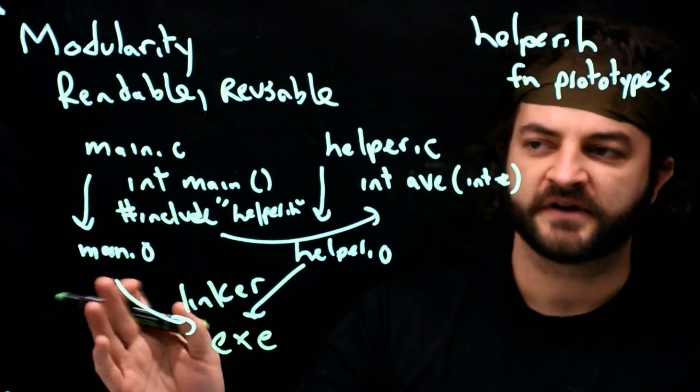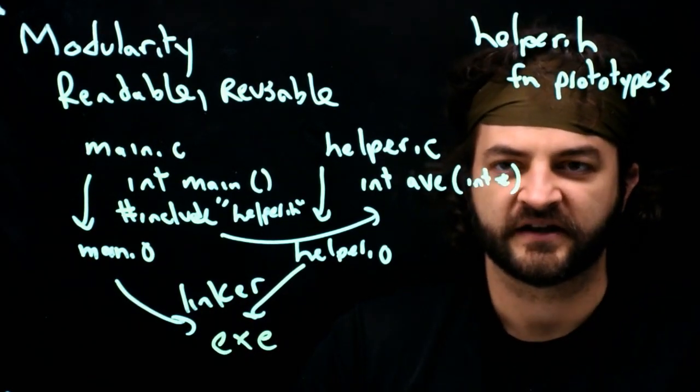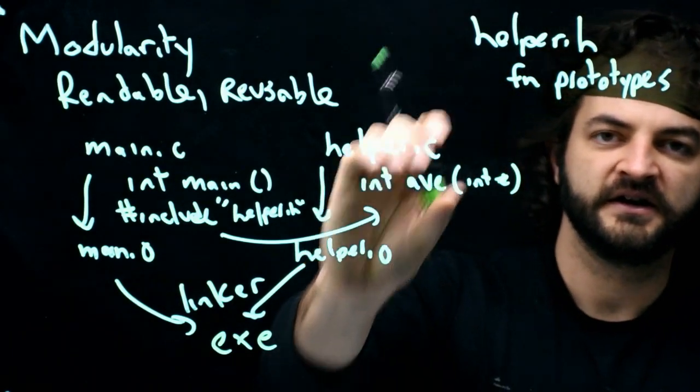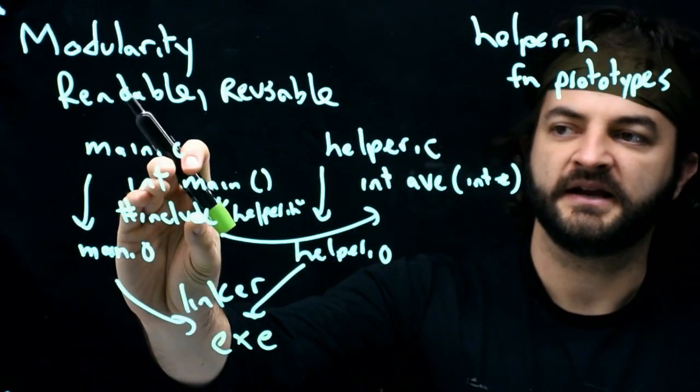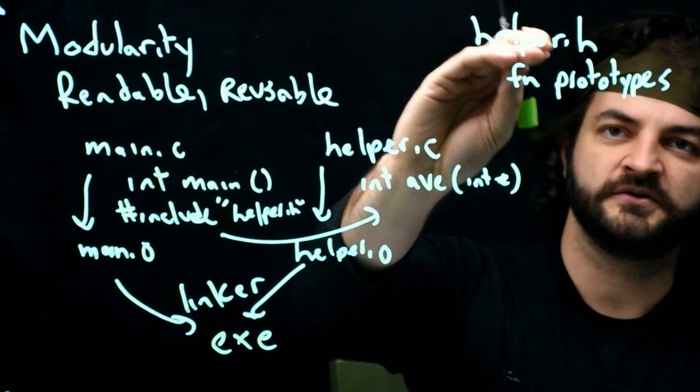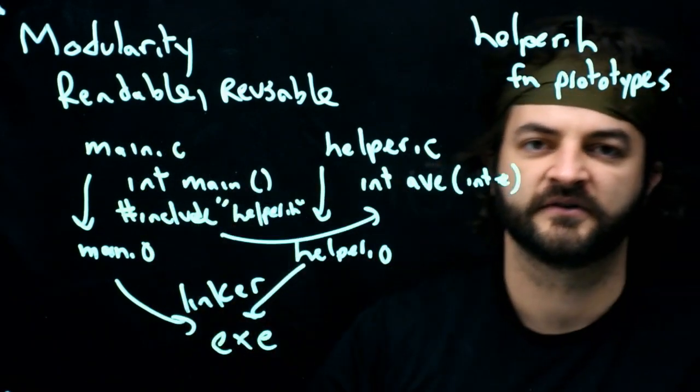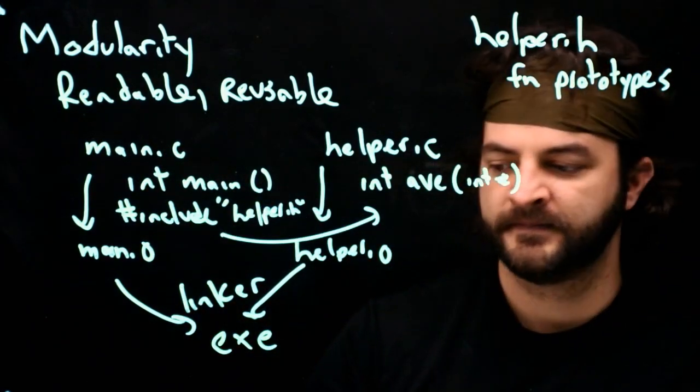The compilation process is specifically set up so that we can use modular code by keeping our functions in the .c file, the prototypes in the .h, and main just has to say, I'm going to include the functions from helper.h. Later, I'll be able to go and grab the content from the .c file.